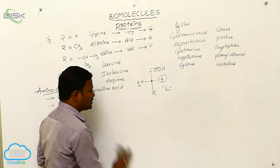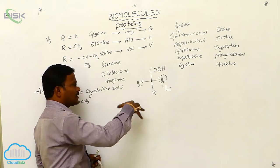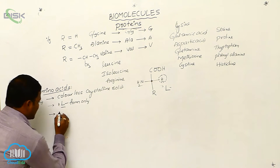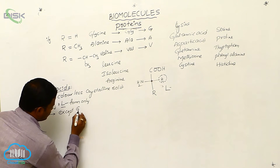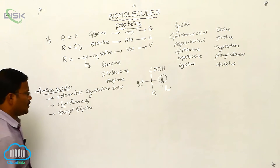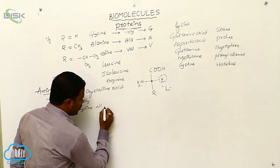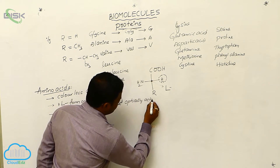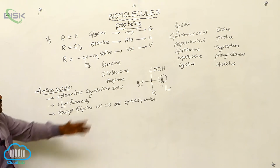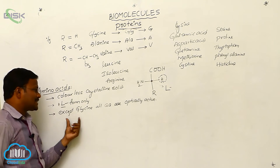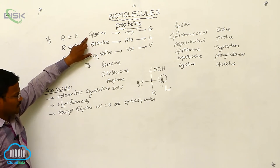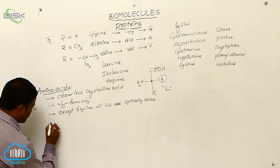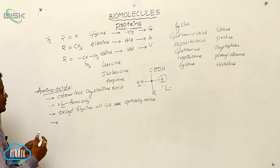All naturally available alpha amino acids are present in L-form only. In the L-form, at the bottommost chiral carbon or asymmetric carbon, hydrogen must be present on the right side. Out of the 20 naturally available amino acids, except glycine, all remaining amino acids are optically active due to chirality in such molecules.